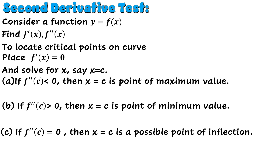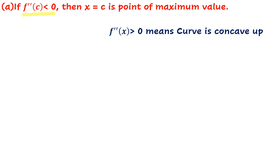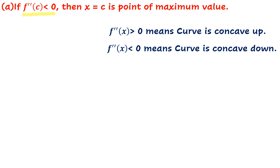We will now discuss all three cases in detail: maxima, minima, and points of inflection. We first take the case when f''(c) is negative. Before moving on, we must understand what it means for the second derivative to be positive or negative. If the second derivative is positive, the curve is concave up; if it is negative, the curve is concave down.